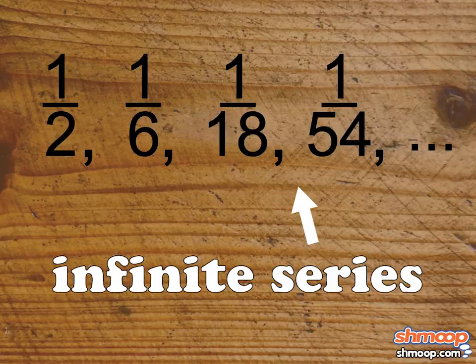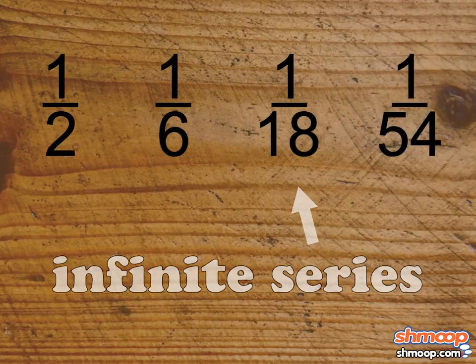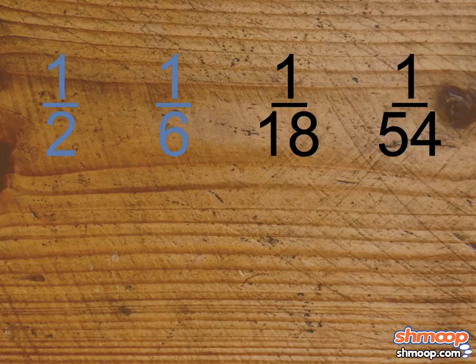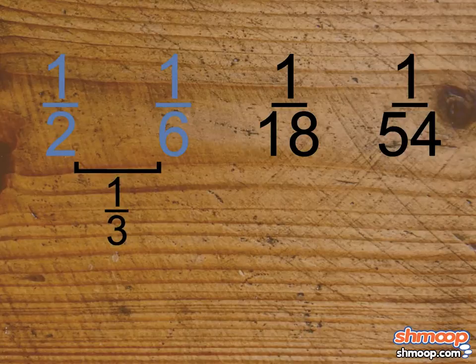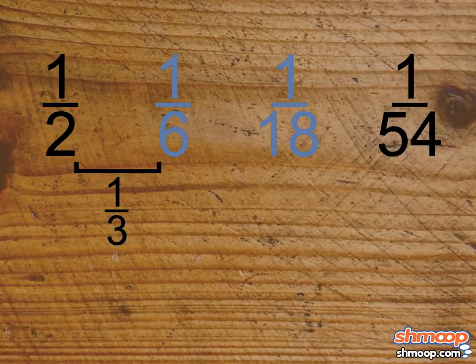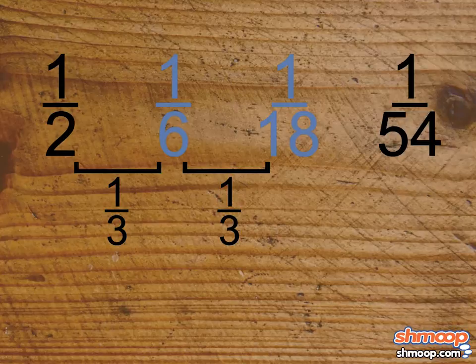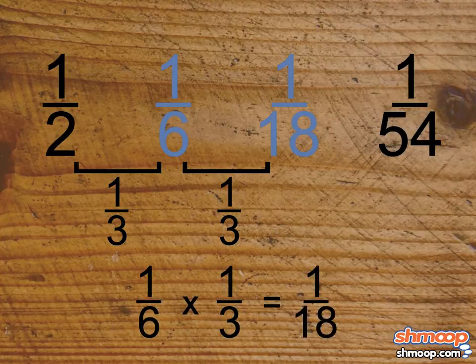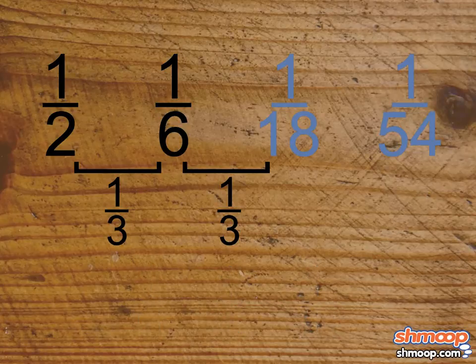But let's take a closer look at the numbers and notice a pattern. Between the first two terms, one-half and one-sixth, there's a ratio of one-third. Between one-sixth and one-eighteenth, we have the same ratio of one-third. That is, we multiply the first by one-third and we get the second. Between one-eighteenth and one-fifty-fourth, same ratio, one-third.